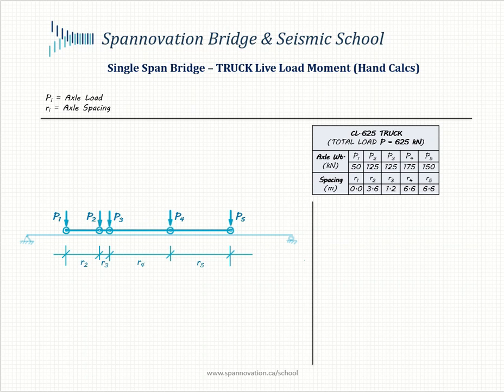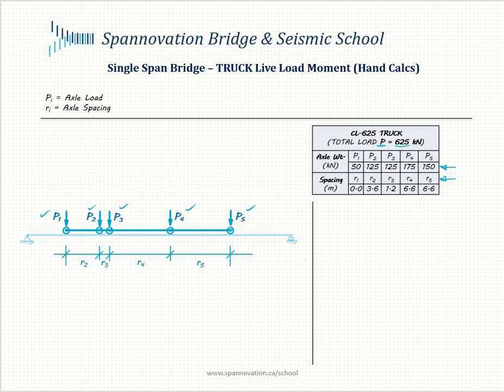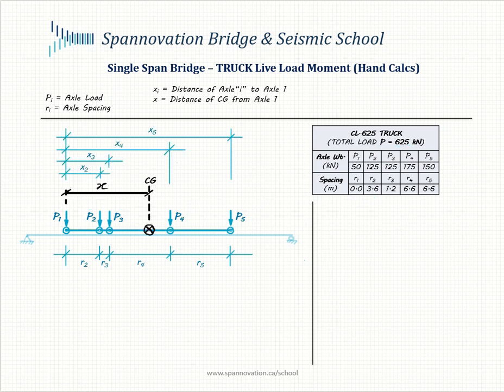I'm going to use a Canadian truck also known as CL625 which has a total load P of 625 kN. It has five axles P1 to P5 and the load per axle is provided in this table. The axles are spaced at distances R1 to R5, where PI stands for axle load and RI for spacing, both ranging from 1 to 5.